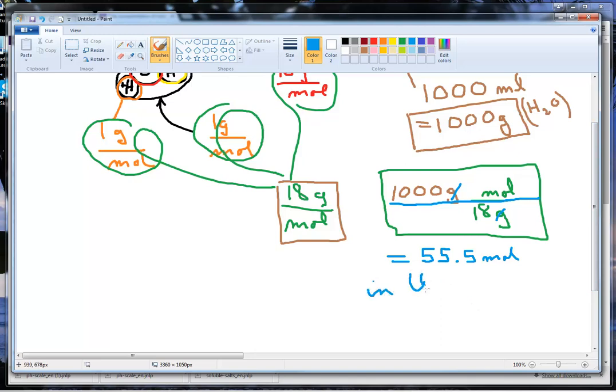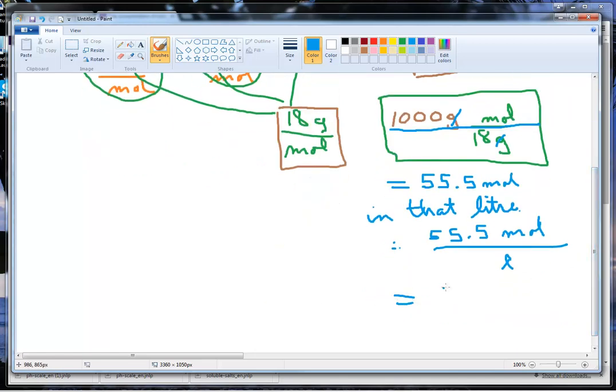Now that's per that one liter. So if I've got 55.5 moles per liter, per one liter, that works out to 55.5 moles per liter. And we have a short form for moles per liter, which is capital M molar, bearing in mind, remember that it's moles per liter. So that's the concentration of pure water.